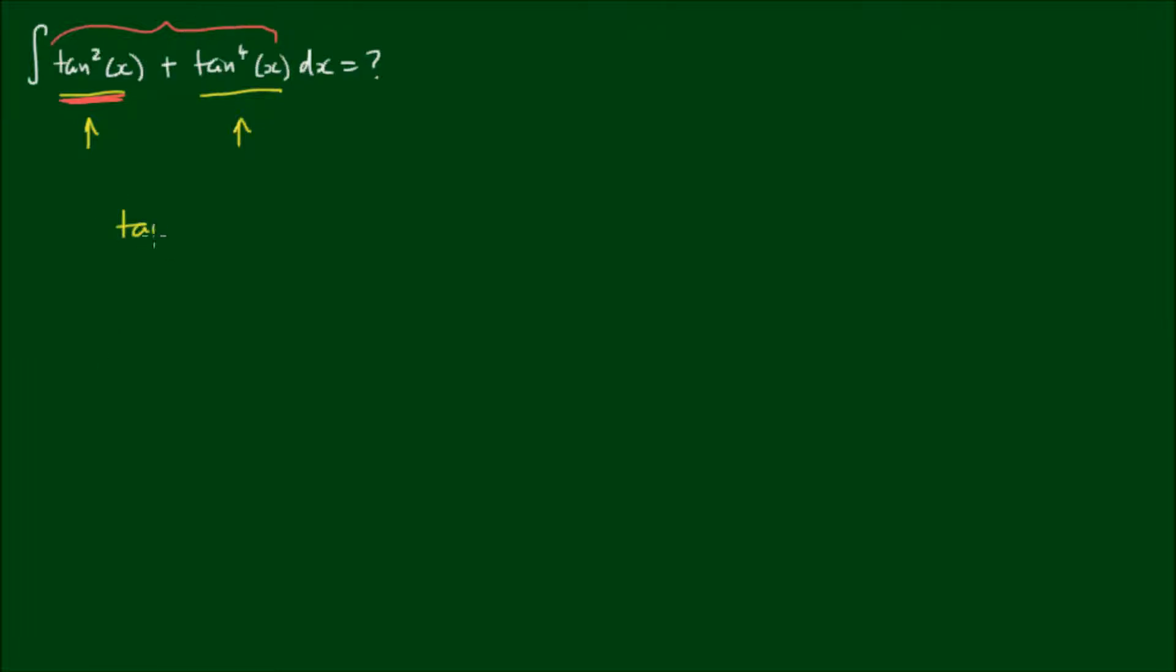So I'll get tan²(x) outside of (1 + tan²(x)). And then I can realize that 1 + tan²(x) is equal to sec²(x). So this is now equal to tan²(x) times sec²(x).